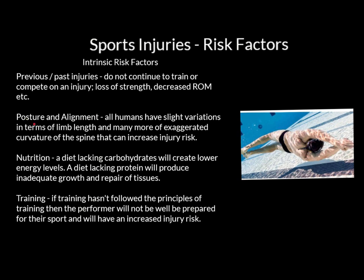Posture and alignment is another intrinsic risk factor. All human beings have slight variations — one limb slightly longer than the other, and certain curvature of the spine different to everyone else. These posture and alignment factors can either increase or decrease injury risk. Someone with an exaggerated spinal curve is likely to get lots of hamstring problems and low back pain, whereas someone with a normal curvature will have reduced risk.